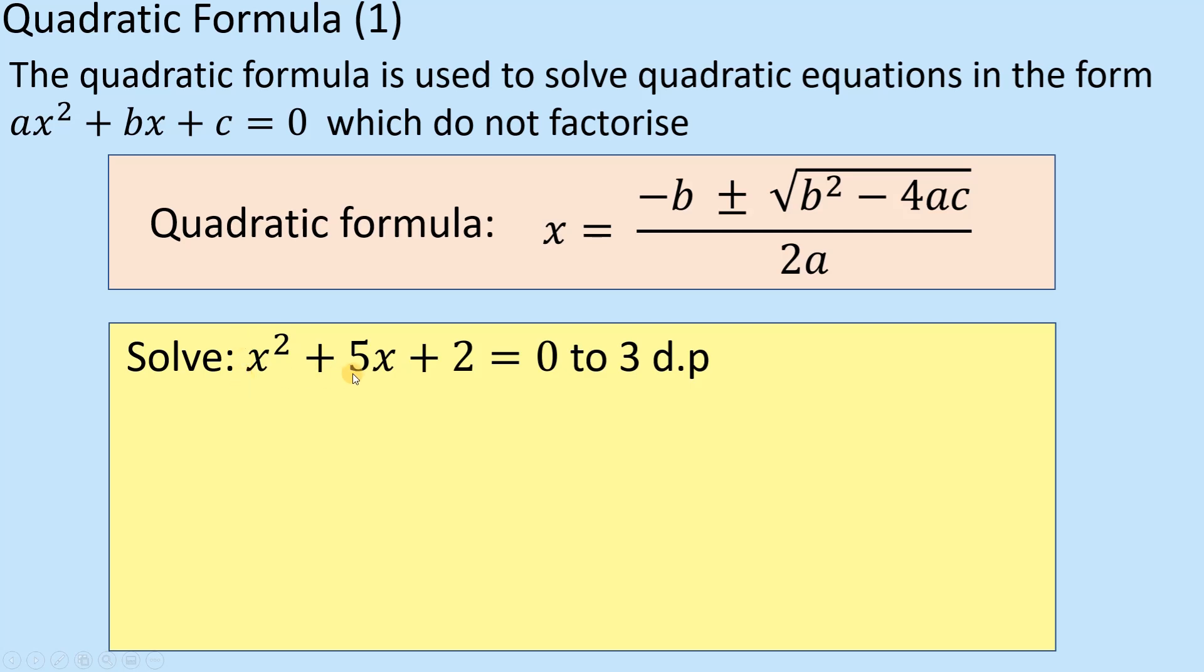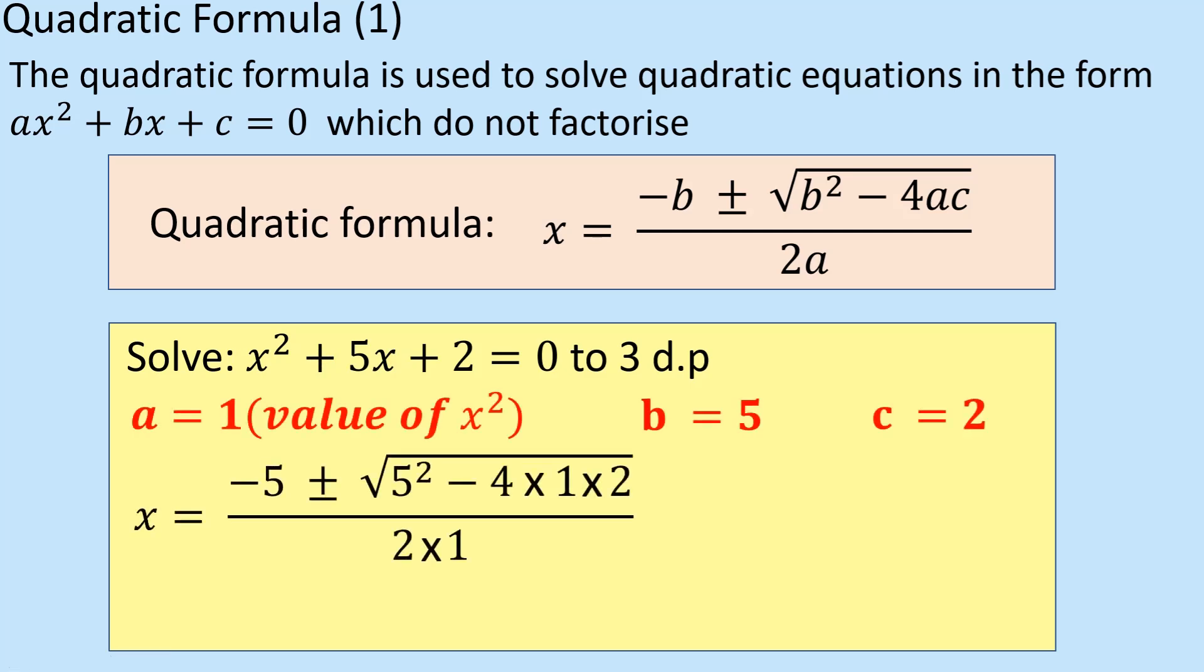b is the value here, which is plus 5, and c is plus 2. The reason I mention the plus is because the second example we're going to look at is when it's a negative, but here we are both positive so it's not a problem. We're now going to plug these numbers into the formula.